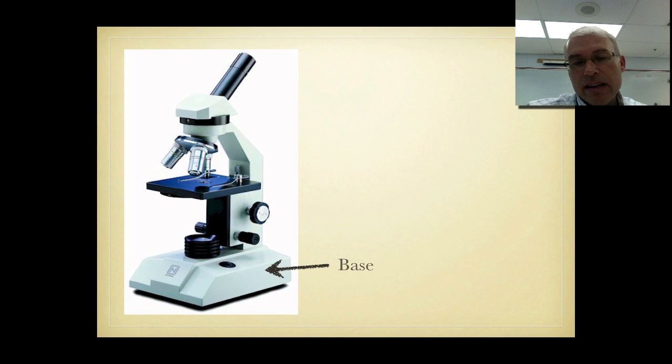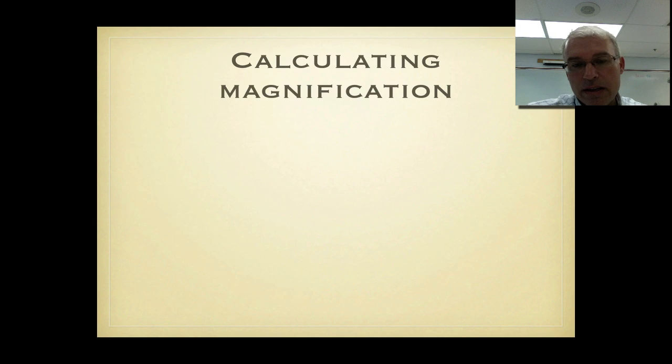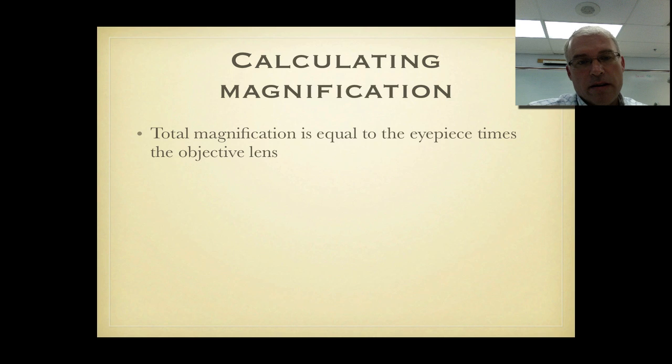And finally I think the last part is the base which is heavy and makes the microscope stable so that it will sit flat on your desk and won't move around while you're trying to look through it. It also contains all the electronics for the light source.